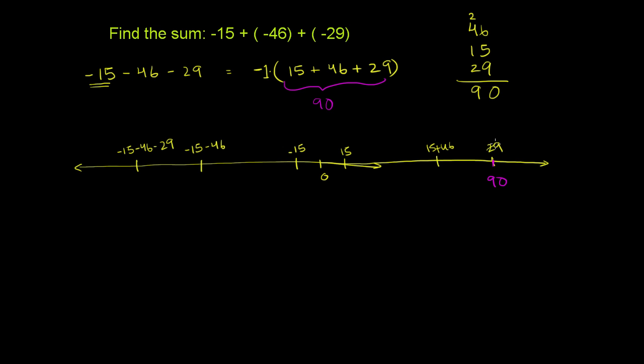A little mistake here. This is 15 plus 46 plus 29 is out here. Now, what we're finding here is the negative version of that. So we're taking negative 15 minus 46.